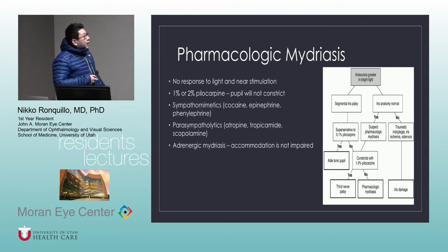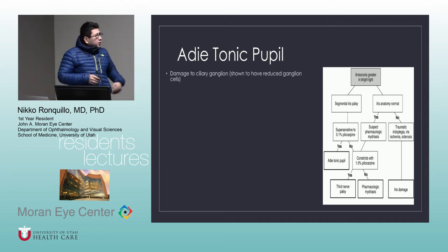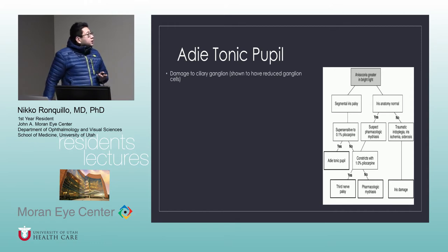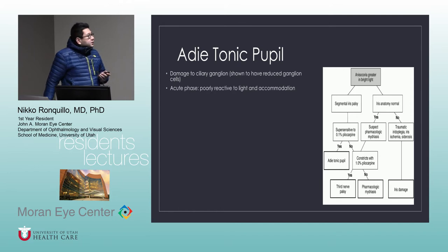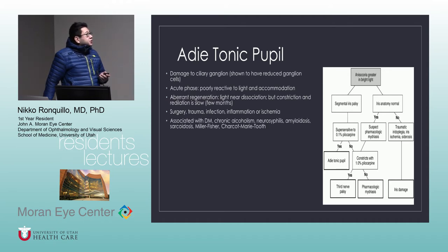For Adie's tonic pupil, we don't fully understand the pathophysiology, but it involves damage to the ciliary ganglion with reduced ganglion cells. In the acute phase, both the pupil's reaction to light and accommodation are poor. Over the next few months, there is light-near dissociation, but constriction improves slightly while the redilatation phase remains slow. This can be caused by surgery, trauma, infection, inflammation, or ischemia.